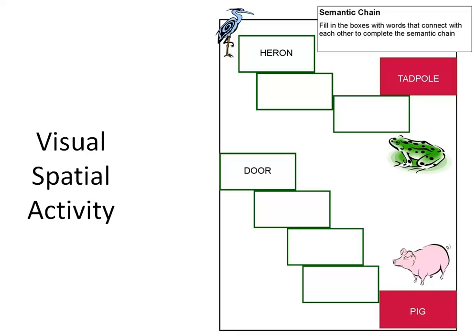The next activity is a visual-spatial activity. In this case we're asking you to do a semantic chain — every session has a different type of activity. You're going to ask the individuals to work from 'heron' to 'tadpole' and come up with a series of words that link them. We've done 'marsh' and 'frog,' and the same with 'door' to 'pig' — door to house, house to farmyard, farmyard to barn, and then barn to pig. There's no right or wrong answer; you're asking them to be creative and fun and see what kind of ideas they come up with.